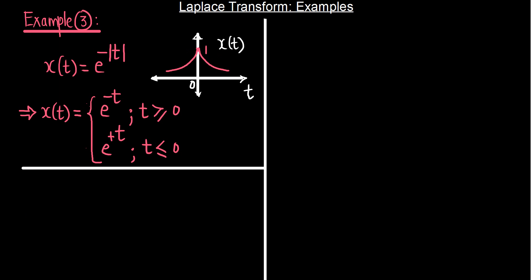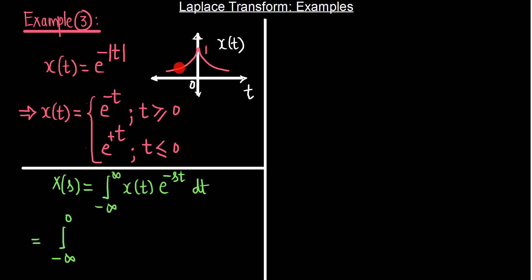From the definition, the Laplace transform is X(s) = integral from -∞ to ∞ of x(t)e^(-st) dt. I can break this into two parts: from -∞ to 0, the signal is e^t, and from 0 to ∞ it is e^(-t). So the integral becomes the integral from -∞ to 0 of e^t · e^(-st) dt plus the integral from 0 to ∞ of e^(-t) · e^(-st) dt.